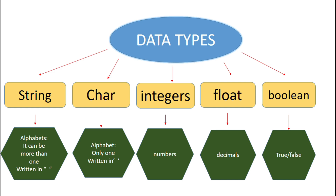First is the string. String is a collection of characters. The alphabets can be both in uppercase and lowercase, and they are written inside double quotes. Symbols such as exclamation, percentage, or dollar can also be considered as strings if they are written inside double quotes. Even numbers written inside double quotes are considered as strings.